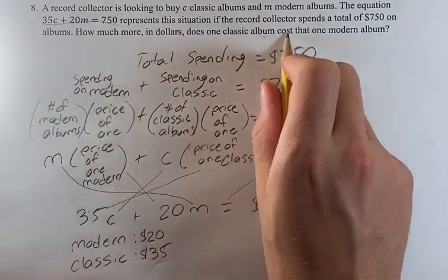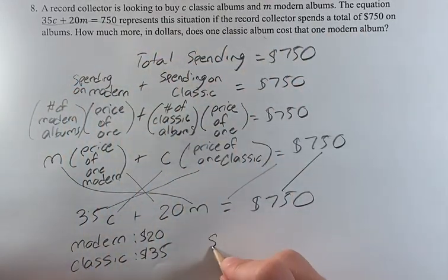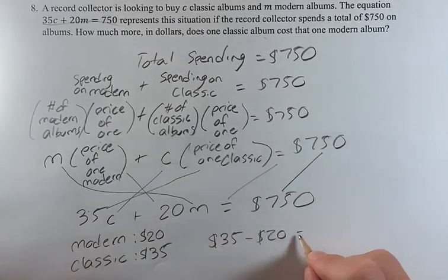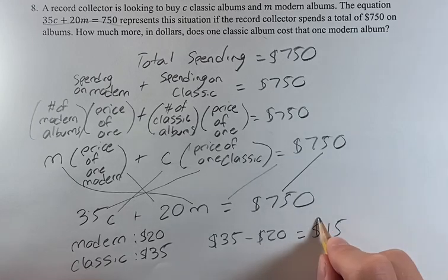How much more does one classic album cost than one modern album? That's just the difference between them. It's $35 minus $20 equals $15, which is going to be your answer.